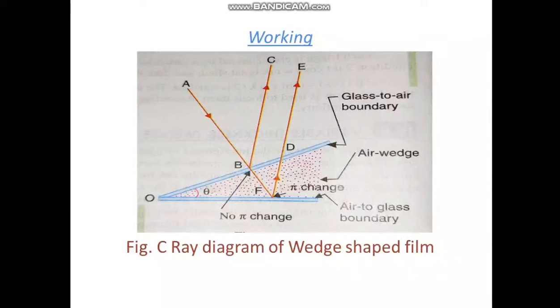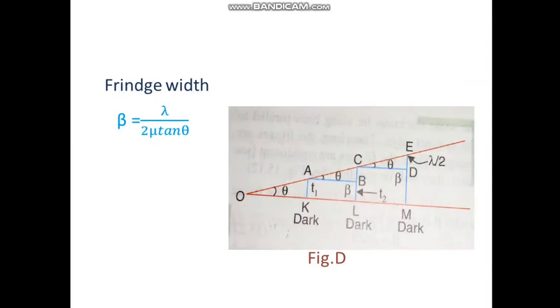The optical path difference between the two rays, we can see in the diagram, the ray BC and DE, is given by delta equals to 2 mu T cos of R minus lambda by 2.